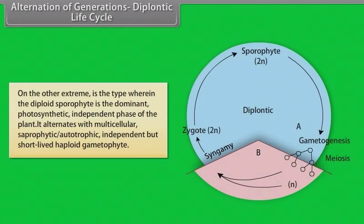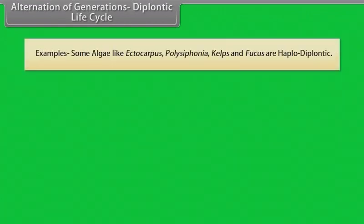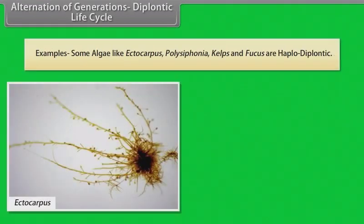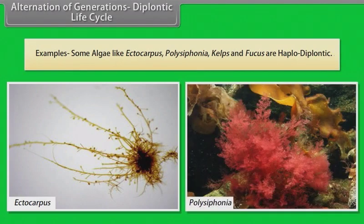Alternation of Generations - Diplontic Life Cycle: On the other extreme is the type wherein the diploid sporophyte is the dominant photosynthetic independent phase of the plant. It alternates with short-lived haploid gametophyte. Examples include some algae like Ectocarpus, Polysiphonia, Kelps and Fucus.